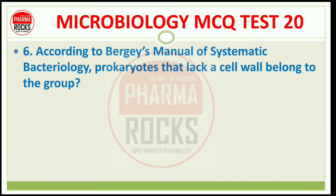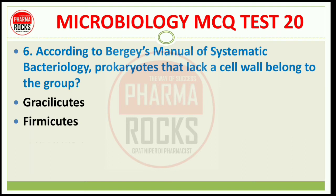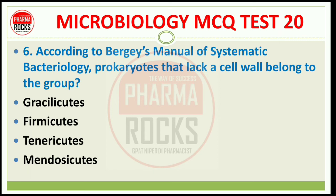Question number 6: According to Bergey's manual of systematic bacteriology, prokaryotes that lack a cell wall belong to the group: Gracilicutes, Firmicutes, Tenericutes, or Mendosicutes? The right answer is option C, Tenericutes.